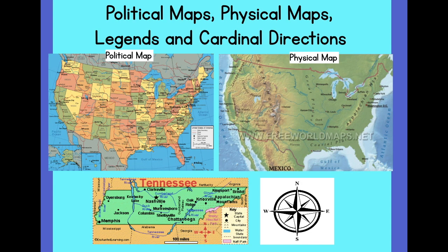We can use legends and cardinal directions to determine locations on physical and political maps. Remember that political maps show boundaries of countries and states. They can also indicate the location of major cities and they usually include significant bodies of water. A physical map's primary purpose is to show landforms like deserts, mountains, and plains. A map legend or key is a visual explanation of the symbols used on the map. The cardinal directions are north, south, east, and west.